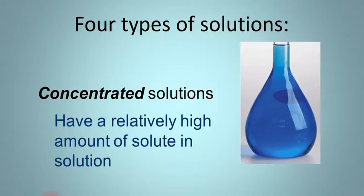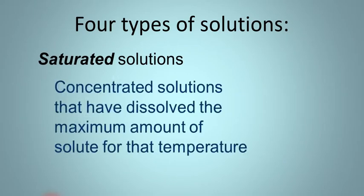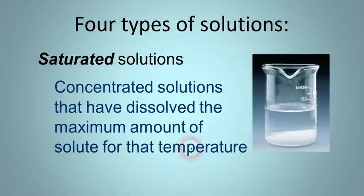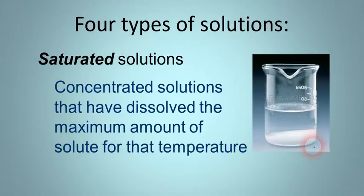Now if you keep adding solute, eventually you're going to get to a point where you have dissolved as much solute in the solvent as you can — that's the maximum. That's called saturated: when the solution has dissolved the maximum amount of solute at that temperature. Here's an example — we've dissolved lots and lots of that compound into the water and it's not dissolving anymore. We can see that because there's some excess down on the bottom of the beaker. So that's a saturated solution.